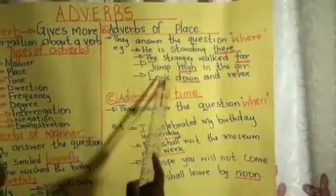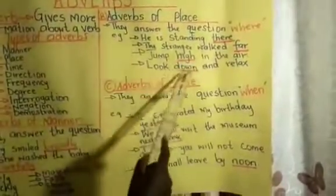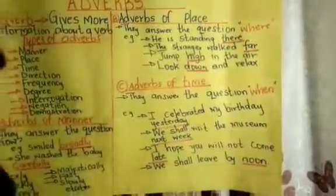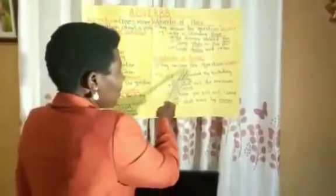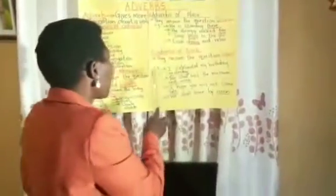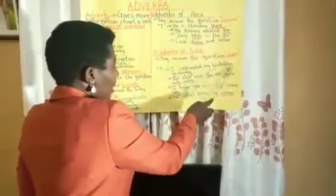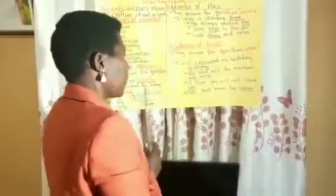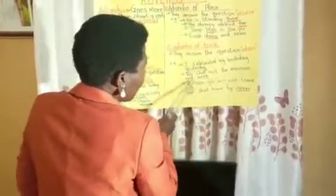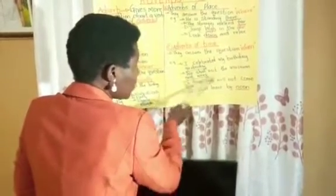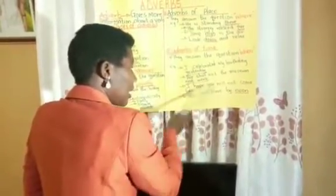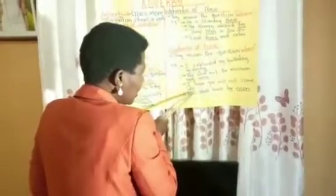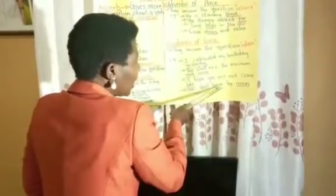Look down and relax. 'Down' is an adverb of place because it is showing us where something is happening. Lastly, let's look at adverbs of time. Adverbs of time answer the question: when? For example, I celebrated my birthday — when? Yesterday. We shall visit the museum next week. 'Next week' is an adverb of time. I hope you will not come late. 'Late' is the adverb of time here. We shall leave by noon.